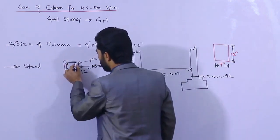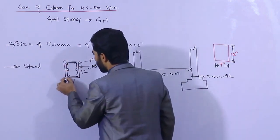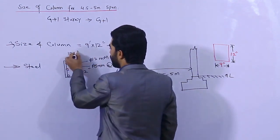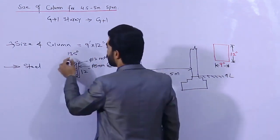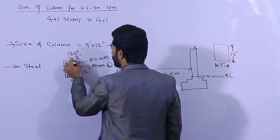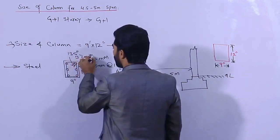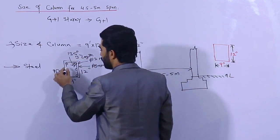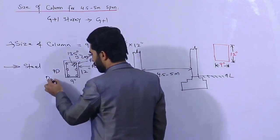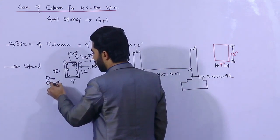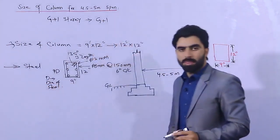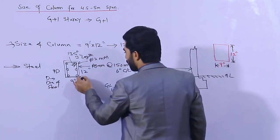As you can see, for the ties, the hook should be bent at 135 degrees. The hook length should not be less than 3 inches, or you can say 9 times the diameter of the steel — that is the hook length.